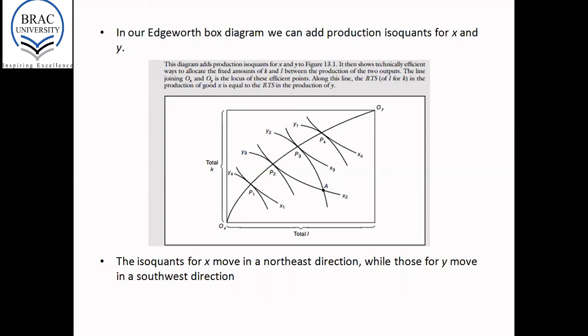And remember, on an isoquant, the amounts produced remain unchanged. So the amount of X which is being produced remains unchanged at X2 at the point P2. Now, what about Y?